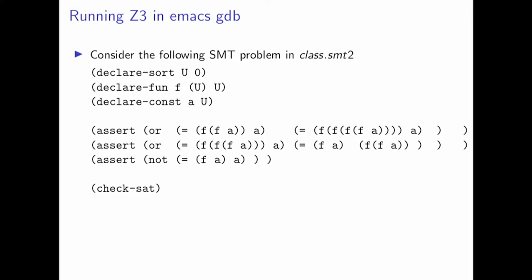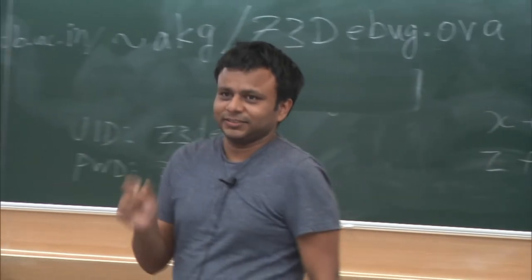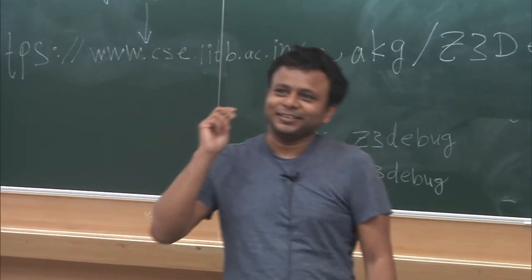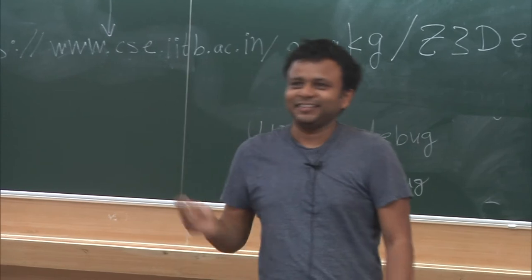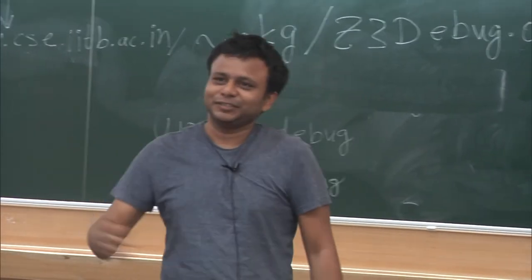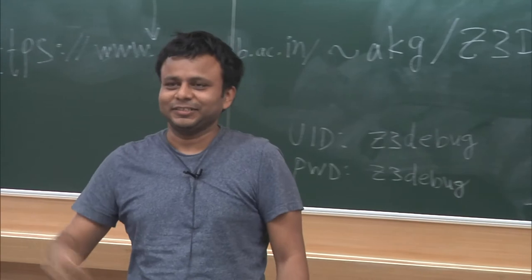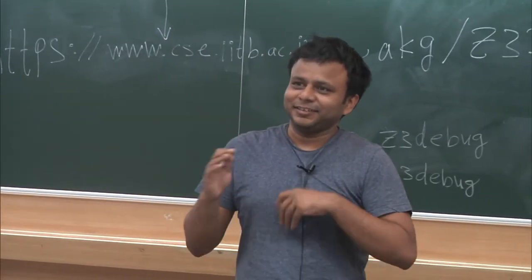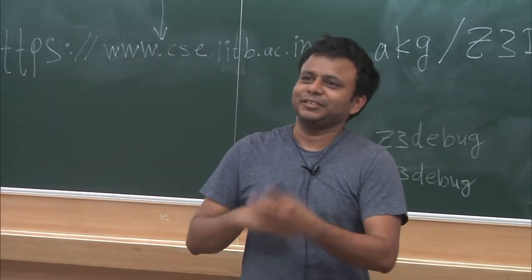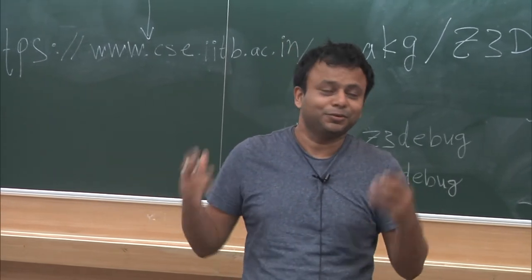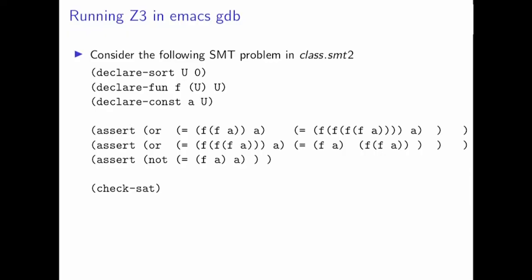We are going to look at a specific problem. This is the smallest example I could construct where the solver actually has to do real solving work. Anything smaller gets solved by the pre-processing step — Z3 keeps replacing formulas using patterns and very quickly discovers false or true. So this is the smallest thing I could construct where actual solving is needed.